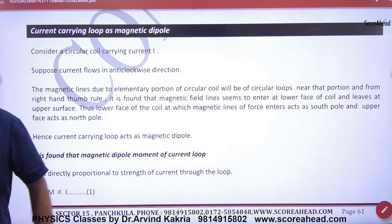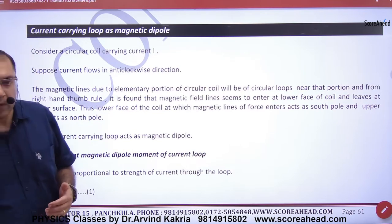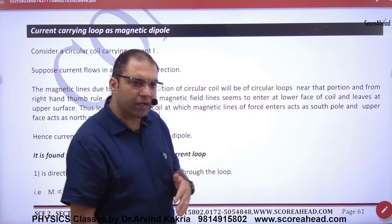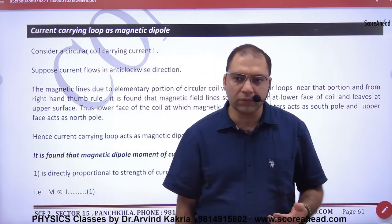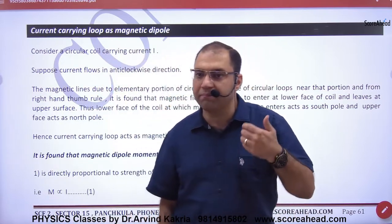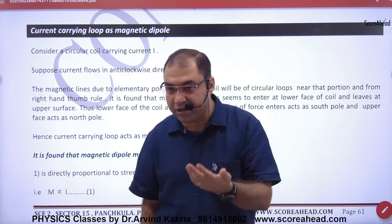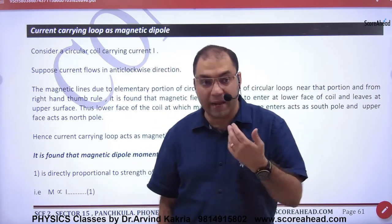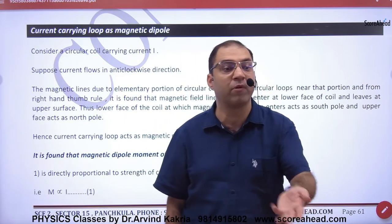The current-carrying loop is a magnetic dipole. It has been decided that if B is generated by the loop, we imagine poles. So if poles are generated and B is generated, it is working like a magnet — then we talk about the magnetic dipole moment.